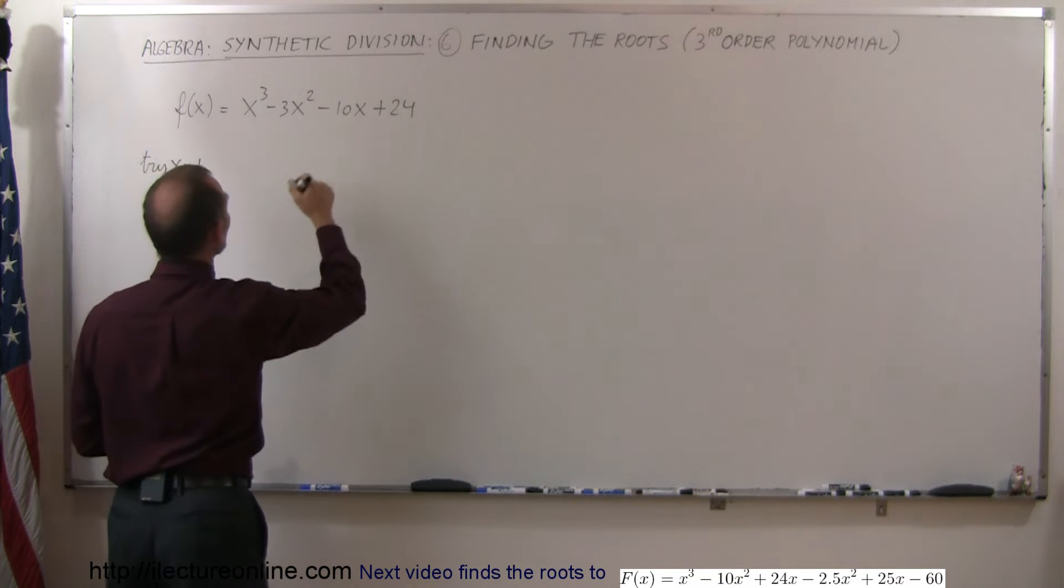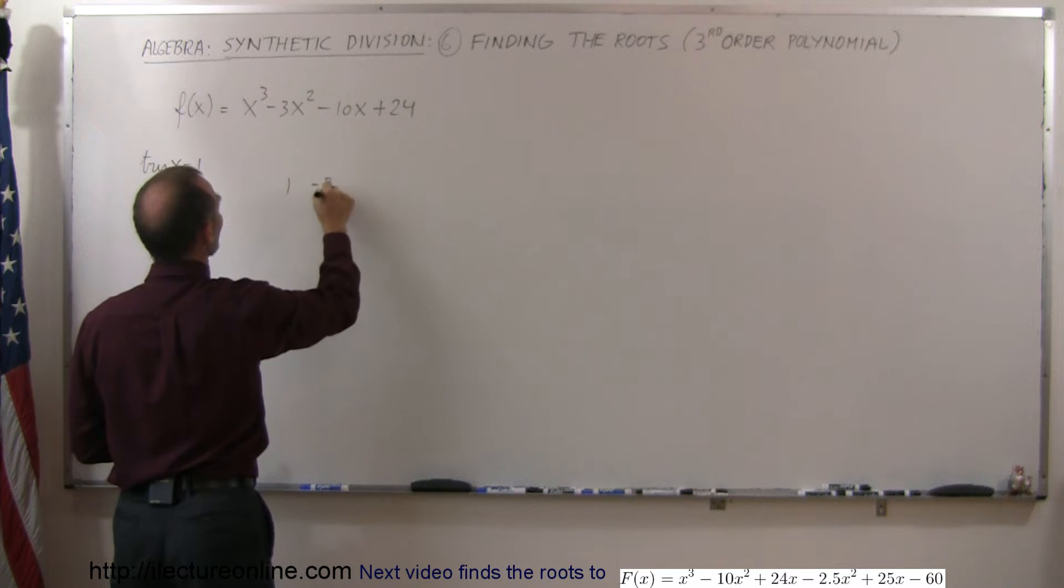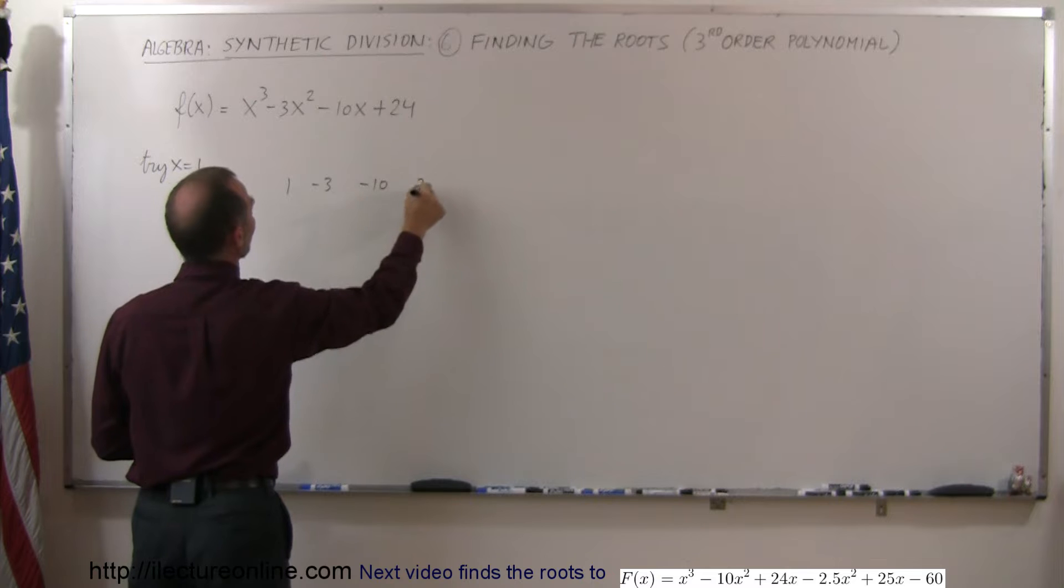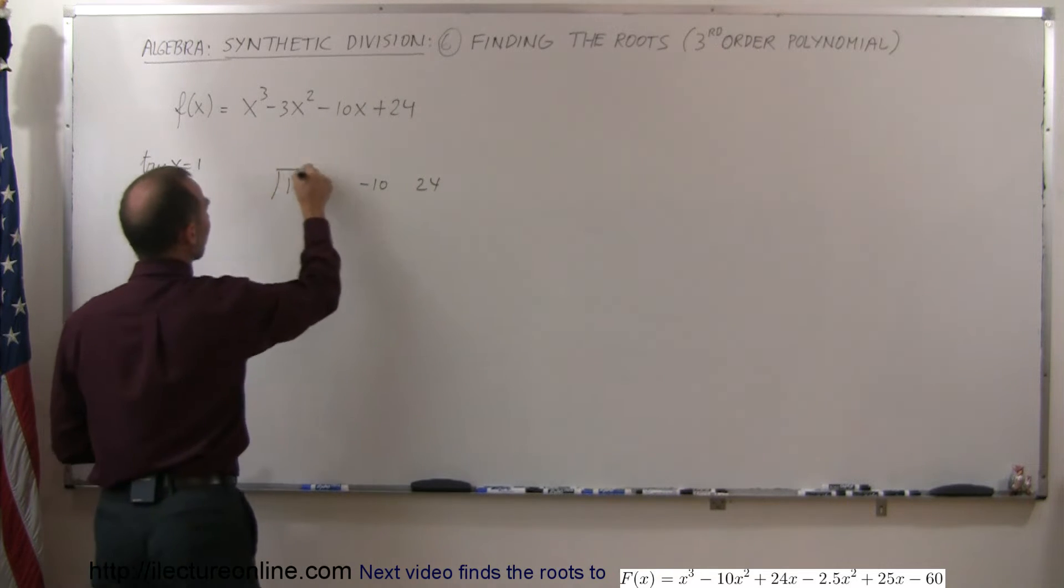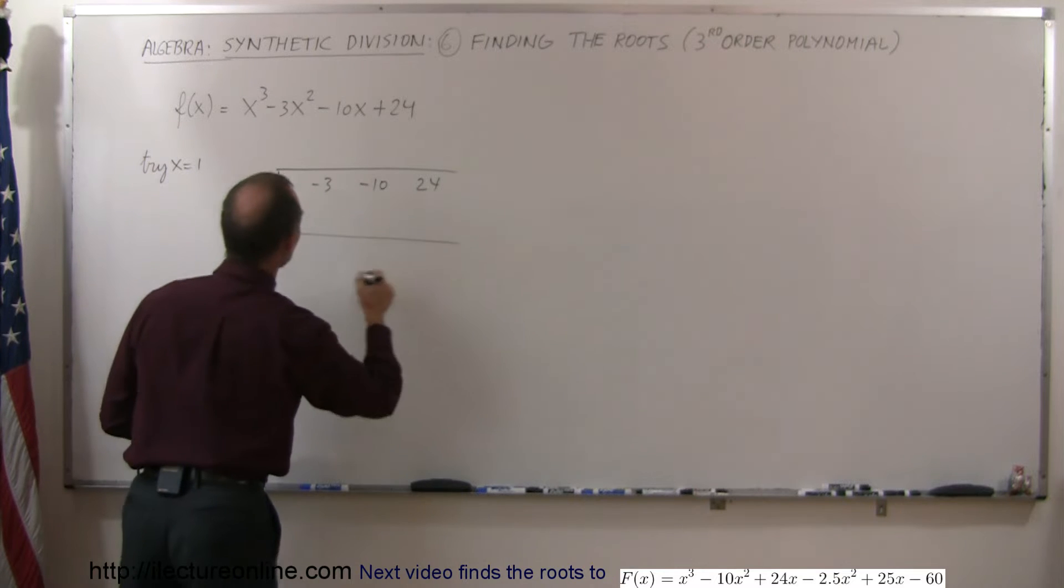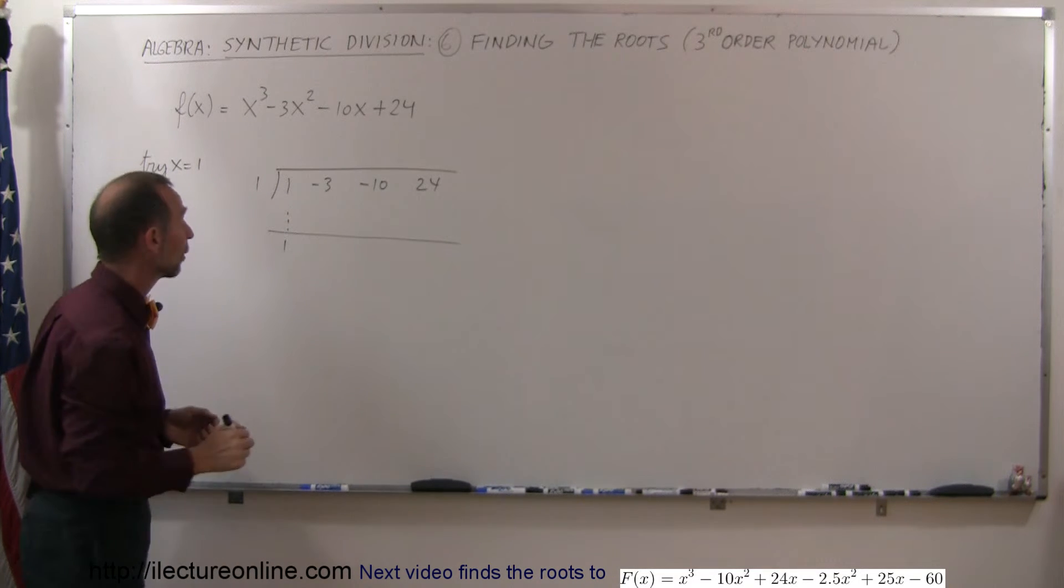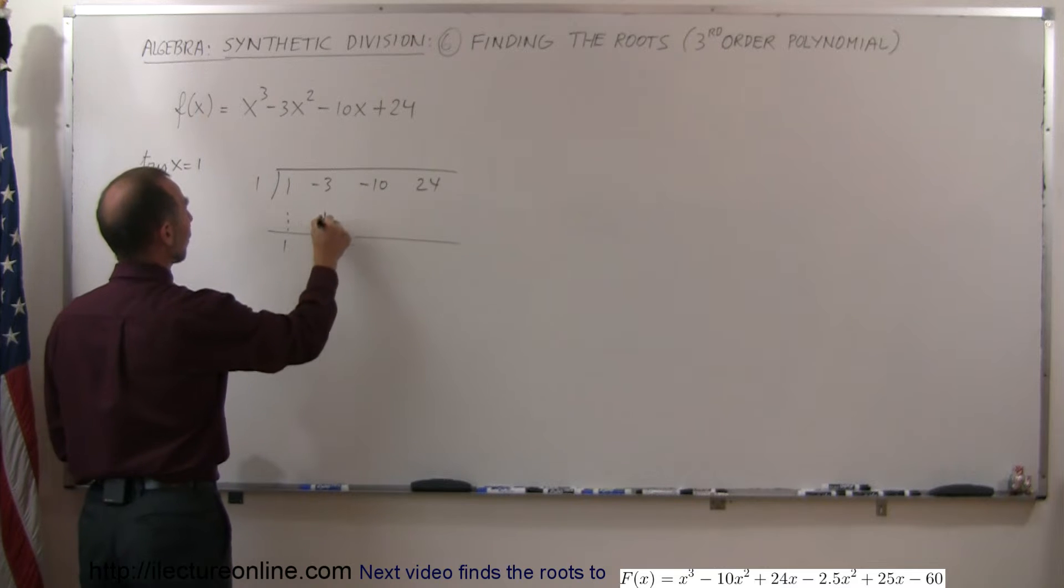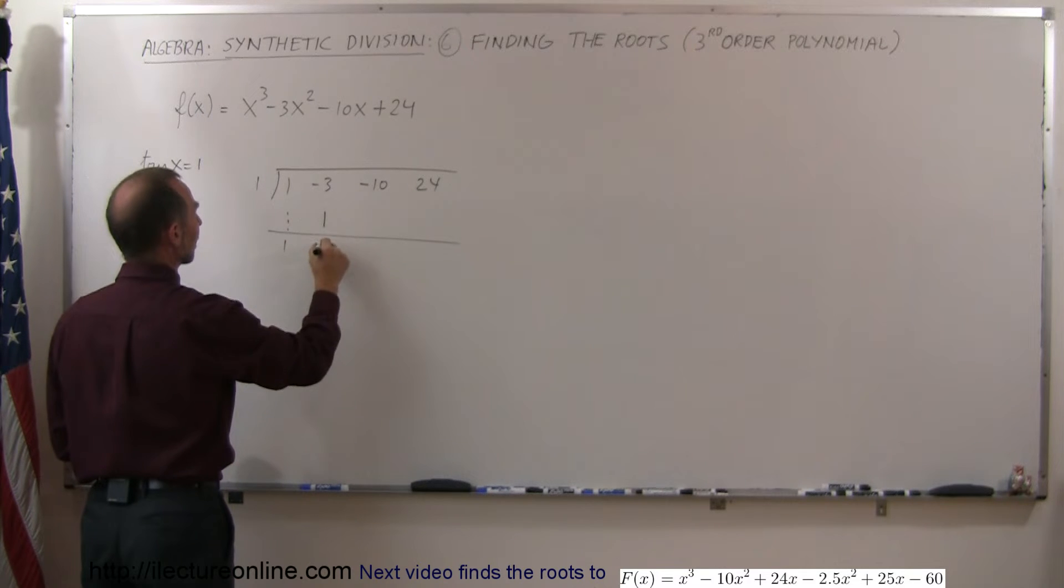So the way to do that is to take the coefficients, which is 1, negative 3, negative 10, 24. And our division symbol, put the 1 over here, put the line down, drop the first number, 1. And now we go ahead, 1 times 1 is 1, 1 plus a negative 3 is negative 2.